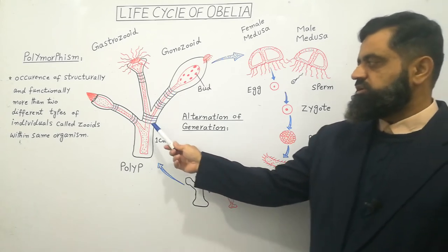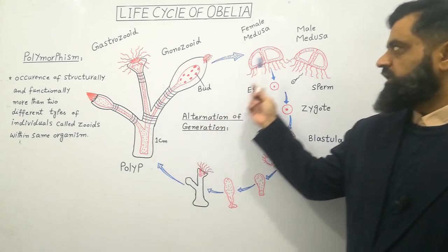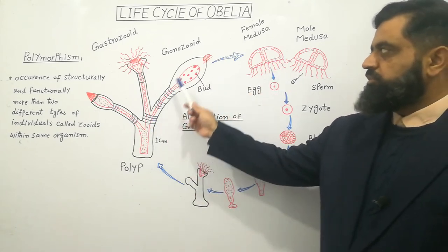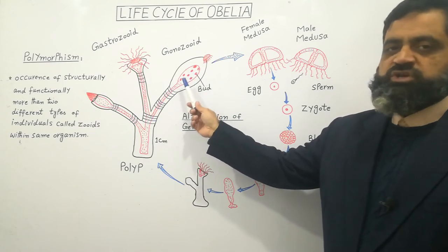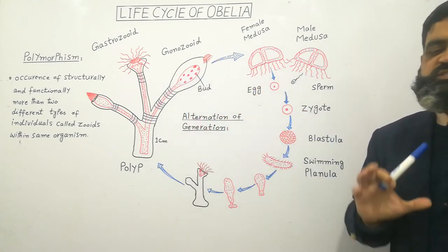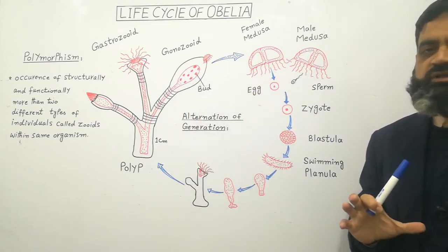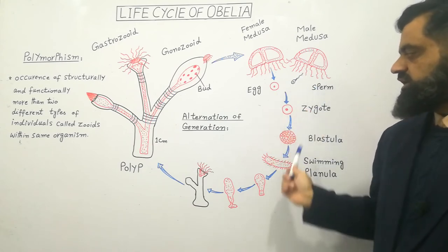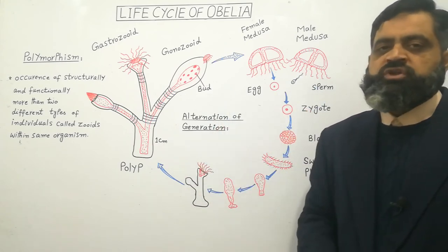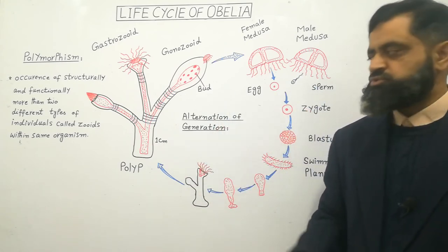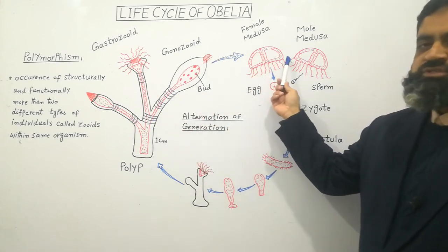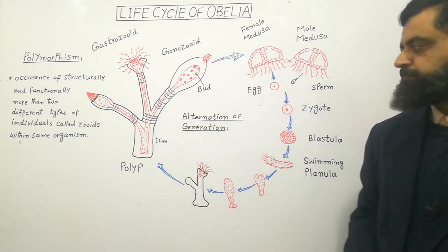This phenomenon is known as alternation of generation, which is found in the animal kingdom. Both of these generations — polyp form and Medusa form — are haploid, but the polyp form reproduces asexually by budding while Medusa reproduces sexually with the help of gametes to give rise to the polyp form. In this way, these two generations give rise to each other: polyp form gives rise to Medusa, and Medusa gives rise to polyp form.